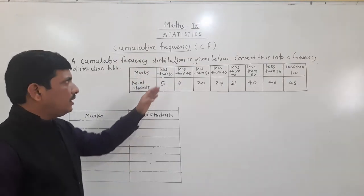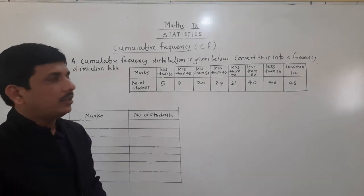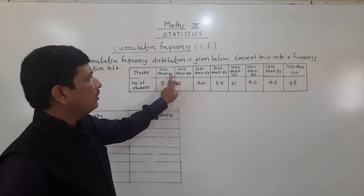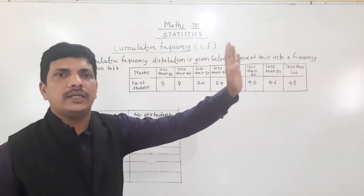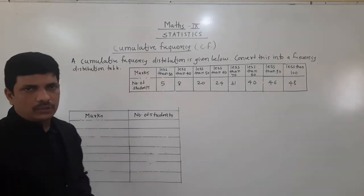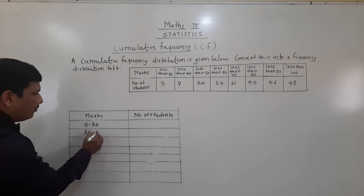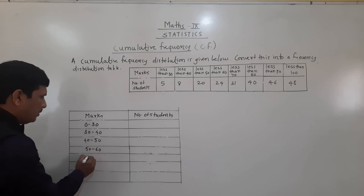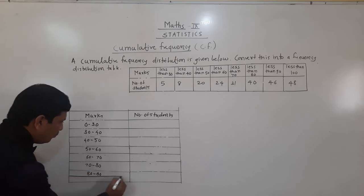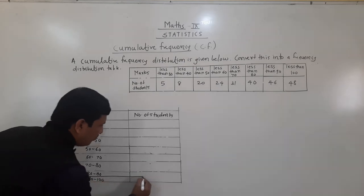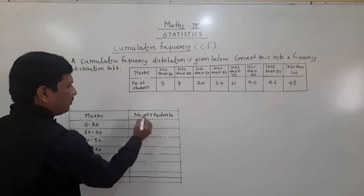The data given is marks less than 30 has 5 students, less than 40 has 8, less than 50 has 20, less than 60 has 24, less than 70 has 31, less than 80 has 40, less than 90 has 46, and less than 100 has 48. Since the addition increases toward the last, this is a less than cumulative frequency table. We need to decide class intervals: less than 30 becomes 0 to 30, then 30 to 40, 40 to 50, 50 to 60, 60 to 70, 70 to 80, 80 to 90, and 90 to 100.